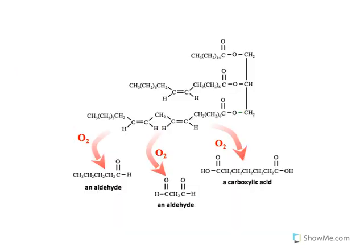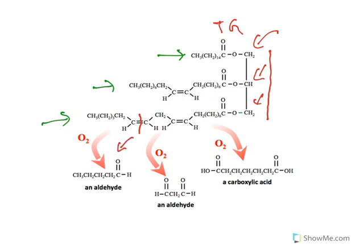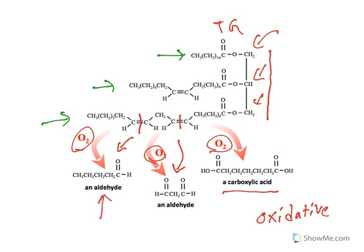Looking at a typical triglyceride diagram: glycerol is combined with three different fatty acids. In these fatty acids, the unsaturated bond undergoes oxidative cleavage and results in an aldehyde. Another unsaturated bond also undergoes oxidative cleavage resulting in an aldehyde, and the other results in the formation of a carboxylic acid. This is what is known as oxidative rancidity — the unsaturated bonds in the presence of oxygen undergo cleavage and result in the formation of aldehydes and carboxylic acids.